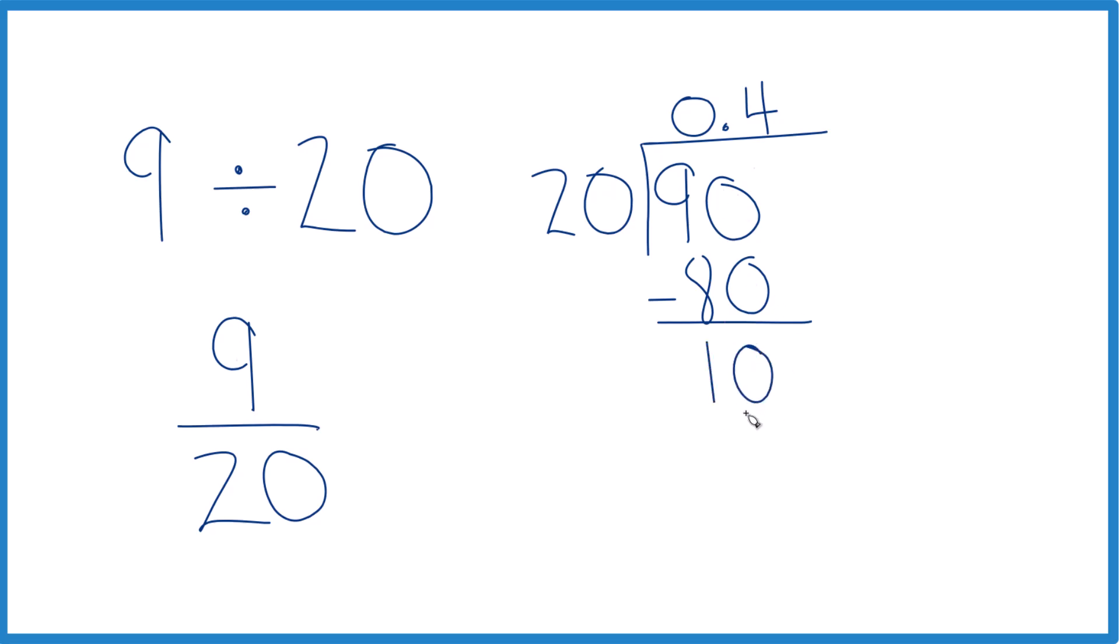20 doesn't go into 10, but let's move over 1 and call this 100. And now 5 times 20, that's 100. Subtract, no remainder, we're done.